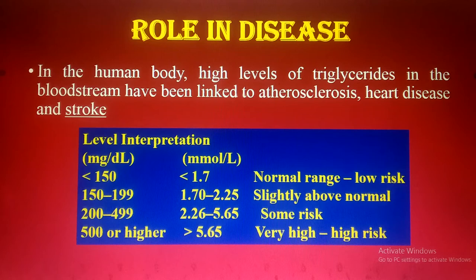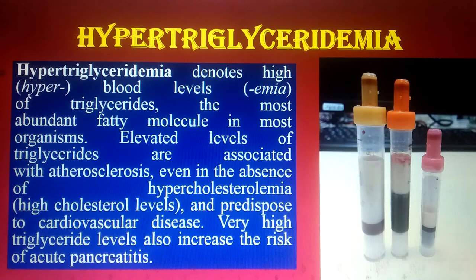500 or higher is very high risk. There is a condition known as hypertriglyceridemia — 'hyper' means high, 'glycerides' refers to triglycerides, and 'emia' means blood. So high levels of triglycerides in the blood is known as hypertriglyceridemia.